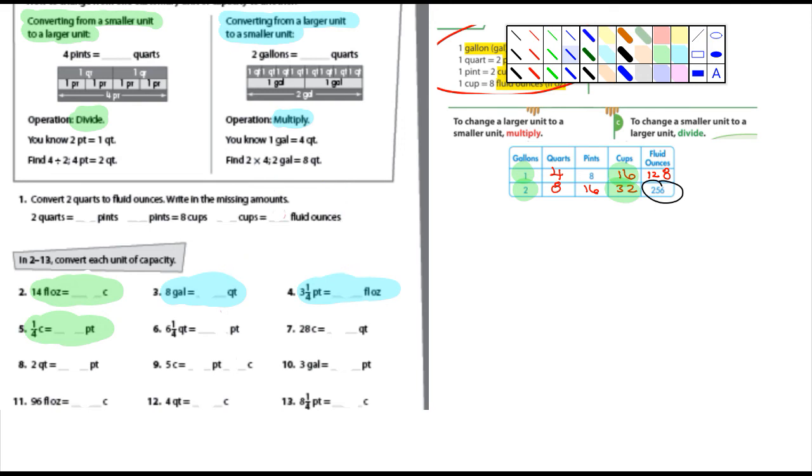So if you're not sure, for example, like number 12 here, it's four quarts to something C, well, the C means cups, and is a quart larger than a cup, it most certainly is.